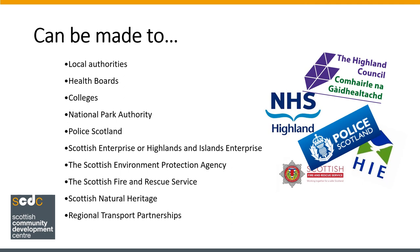Some bright sparks will have noticed one or two organisations missing from this list. If you're interested in health and social care, you may have noticed that integration joint boards — the public authority who oversees health and social care partnerships — are missing. If you want to make a participation request to this body, make it to either your local authority or health board and specify that you want the other to be brought in as well. Arms length external organisations, or ALEOs, are also missing. These include independent charities some Scottish local authorities have set up to deliver responsibilities such as sport, leisure and culture. If you wanted to make a participation request about a service delivered by one of these, you would make it to the overall local authority, who would then bring the ALEO into the discussion.